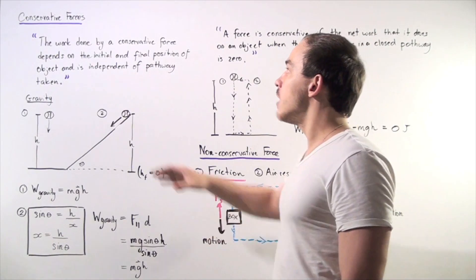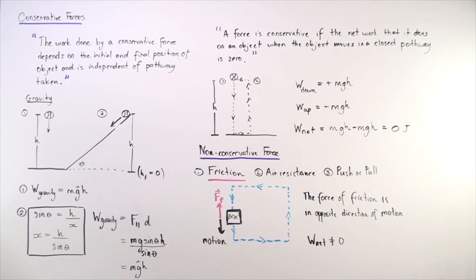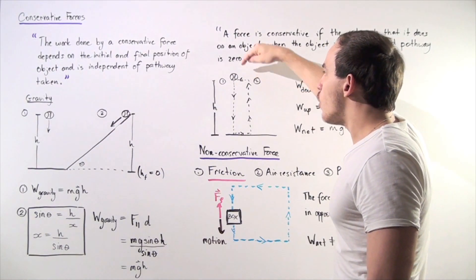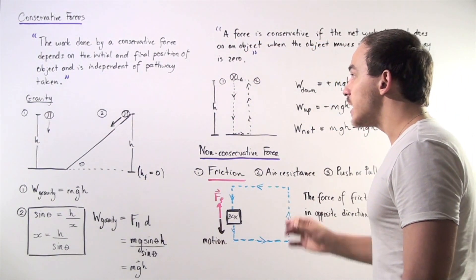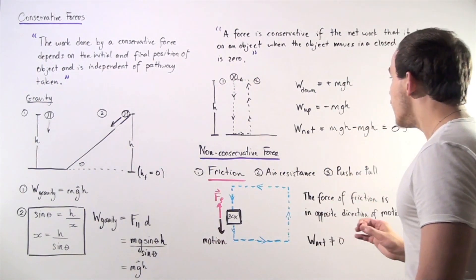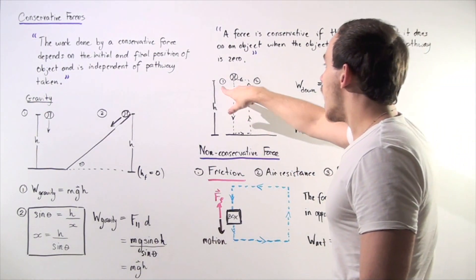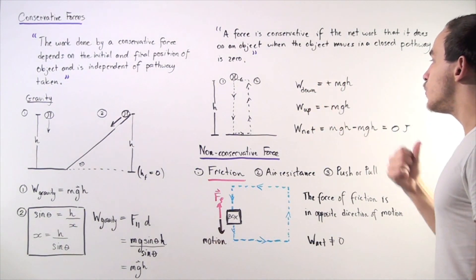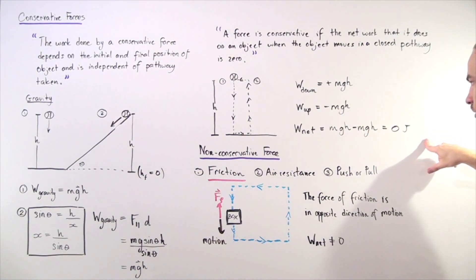One more definition of conservative forces: a force is said to be conservative if the net work it does on an object when the object moves in a closed pathway is zero. If we allow our ball to free fall downward and then raise it back up to the same position, the net work done by gravity is zero — positive work on the way down and negative work on the way up, giving us mgh minus mgh equals zero joules.